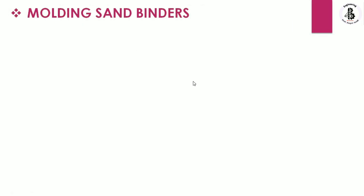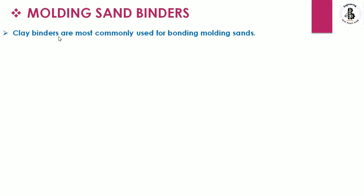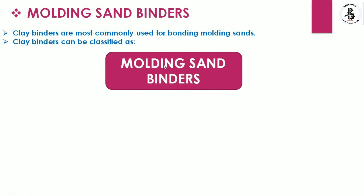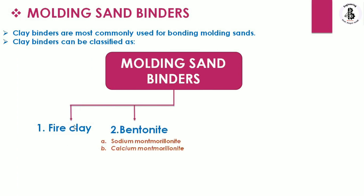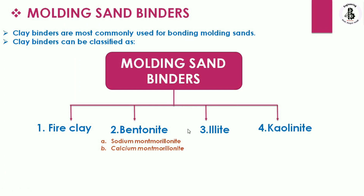Clay binders are most commonly used as bonding agents for molding sands and can be classified into four types: first, fire clay; second, bentonite — which includes sodium montmorillonite and calcium montmorillonite; third, alite; and fourth, kaolinite.